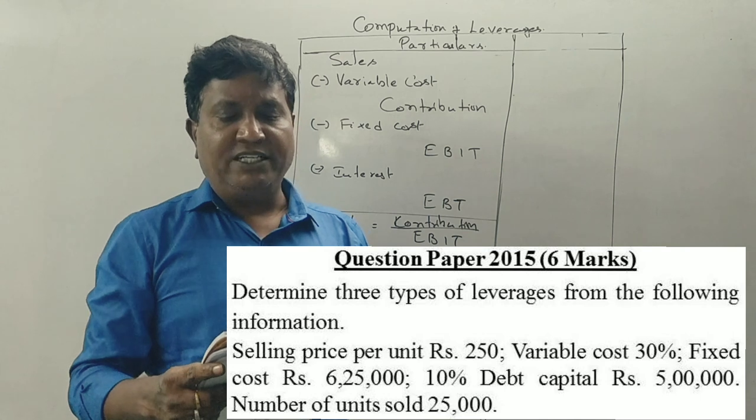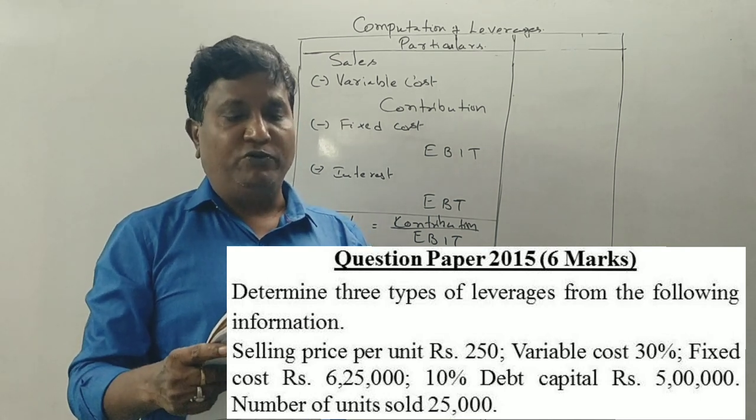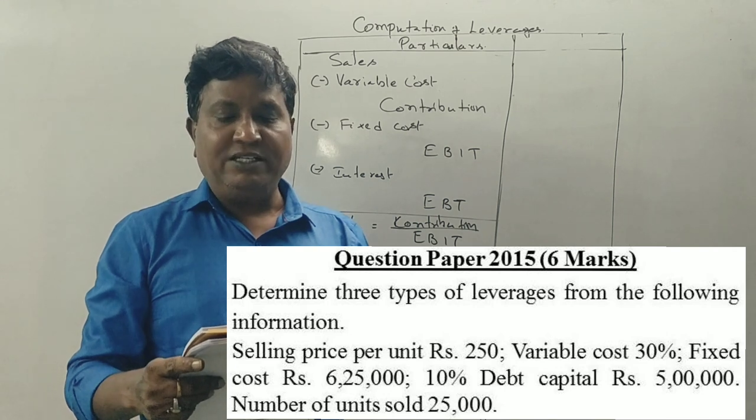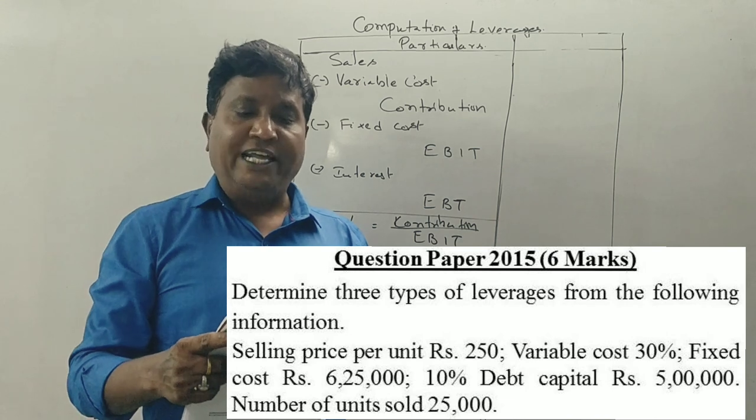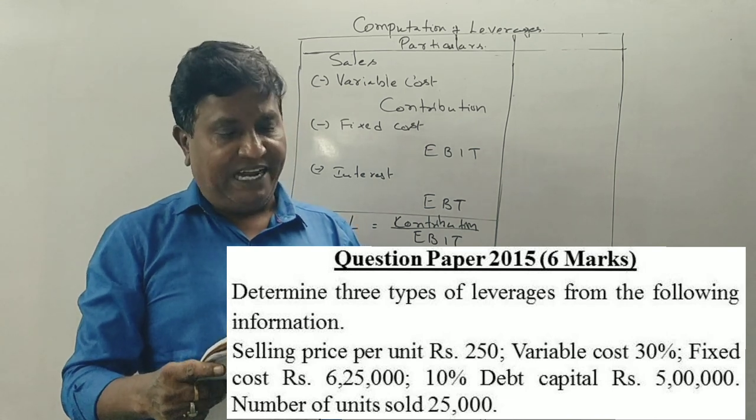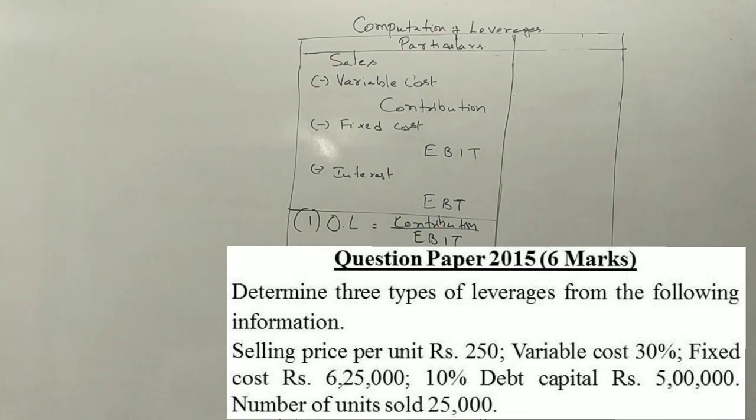Determine the three types of leverages from the following information. Selling price per unit is Rs. 250, variable cost is 30%, fixed cost is Rs. 6,25,000, 10% debt capital Rs. 5,00,000, number of units sold is 25,000.